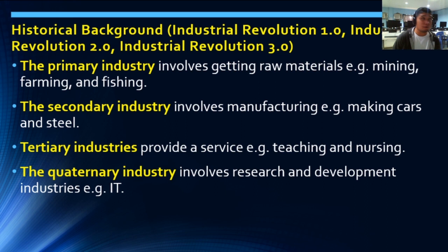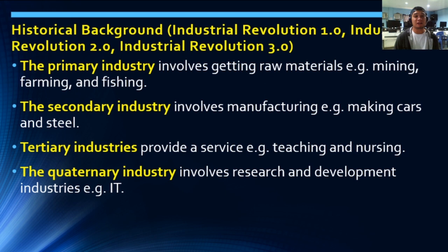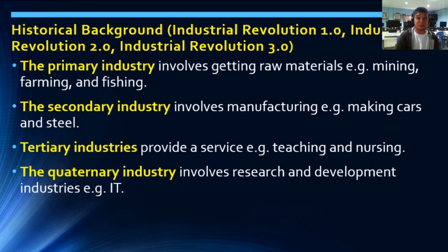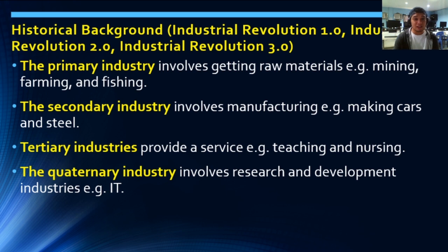Based on industries, here is how they evolved. The primary industry involves getting raw materials — examples are mining, farming, and fishing. The secondary industry involves manufacturing such as making cars and steel. The tertiary industry provides services — examples include teaching and nursing. The quaternary industry involves research and development industries, with examples such as IT and many more.